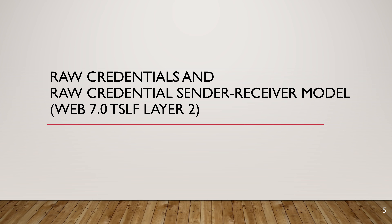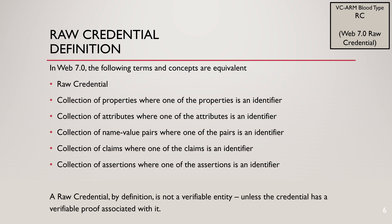Let's review raw credentials. In Web 7.0, the following terms are equivalent synonyms: a raw credential is a collection of properties, attributes, name-value pairs, claims, or assertions where one of them is an identifier. All of these are synonyms for one another. A special note: a raw credential by definition is not a verifiable entity unless the credential has a verifiable proof associated with it.